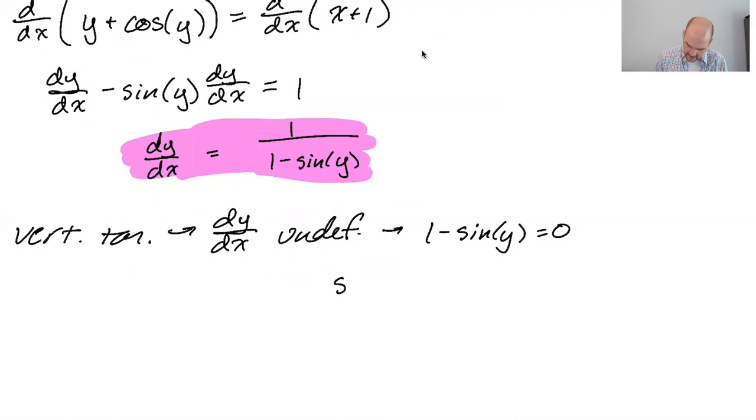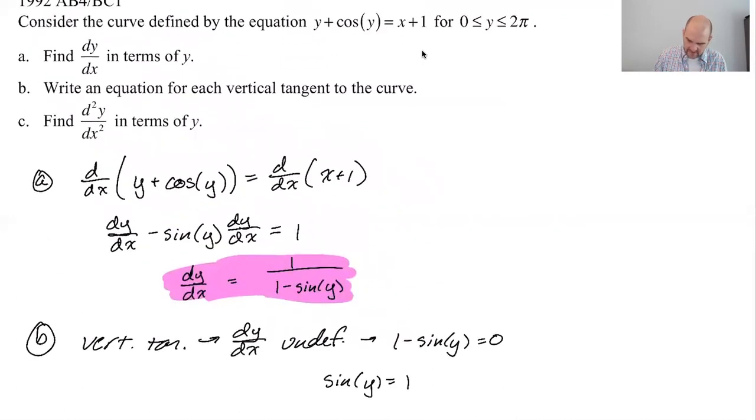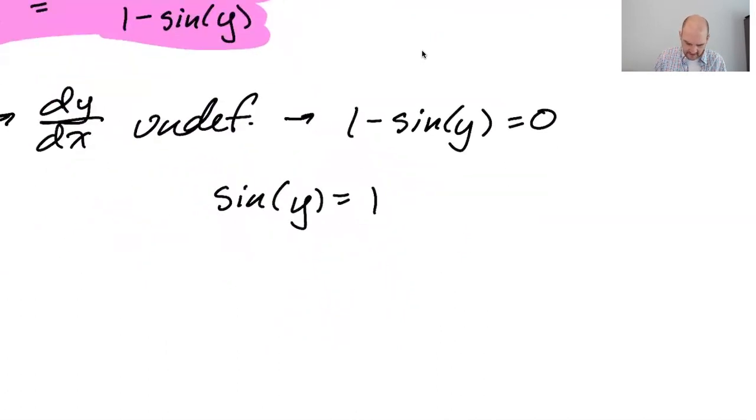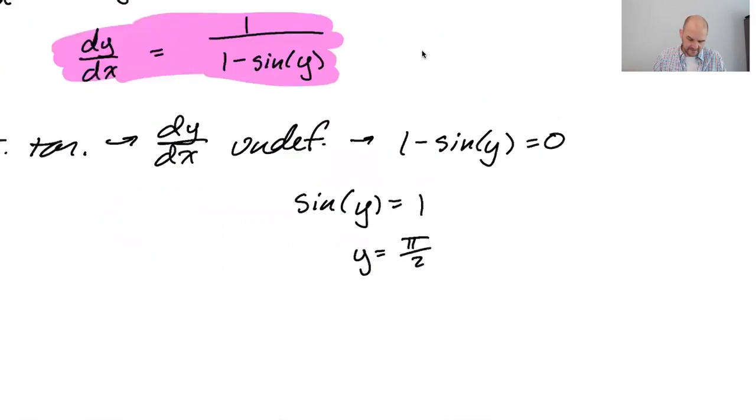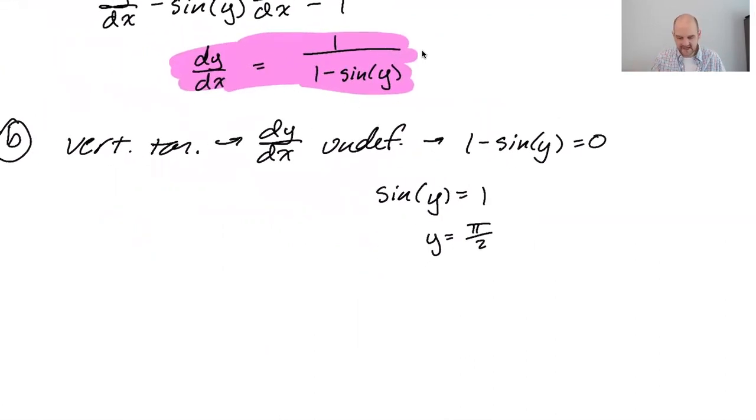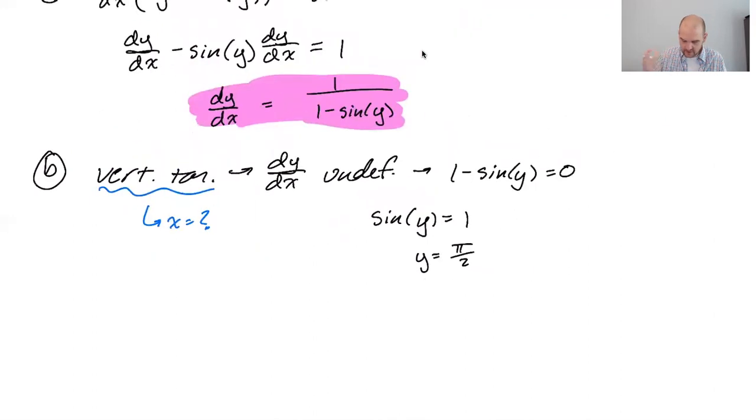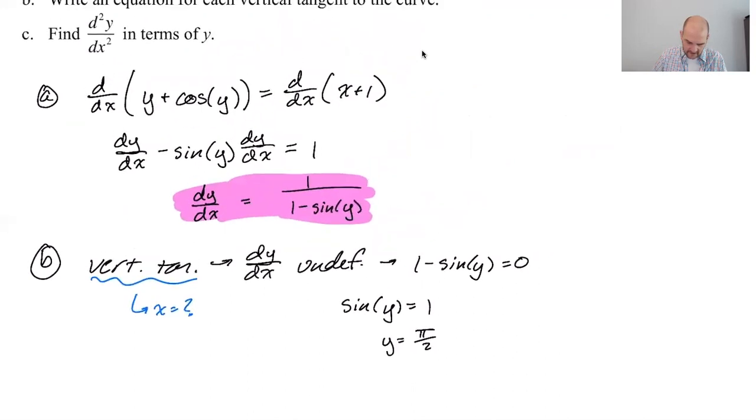which means that the sine of y is equal to 1. Now, we were told that y is between 0 and 2π. So I need to think, where is sine equal to 1 between 0 and 2π? That's when y is equal to π/2 as the only value that's in there. So y is equal to π/2. But this question is about vertical tangent lines. Vertical tangent lines have equations that look like x equals something. So we're looking for x equals something. So I now know what y is. I need to figure out x.